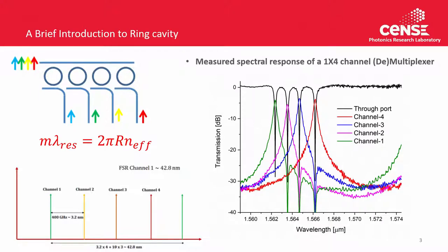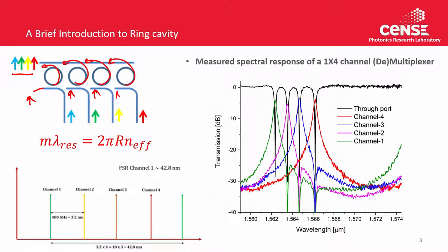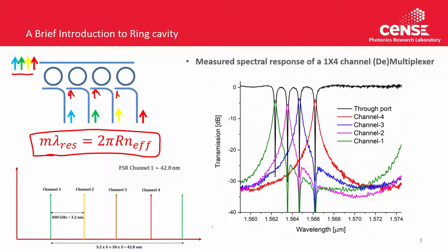Let us first look at wavelength filtering — multiplexing and demultiplexing. Demultiplexing means multiple wavelengths come in and you take individual wavelengths out using simple ring resonators. You can also do the reverse: add wavelengths and combine them into a single channel. So both multiplexing and demultiplexing are achievable using this ring resonator configuration. The formula used is 2πr times n_effective, where r is the radius of the ring and n_effective is the effective refractive index of the waveguide.